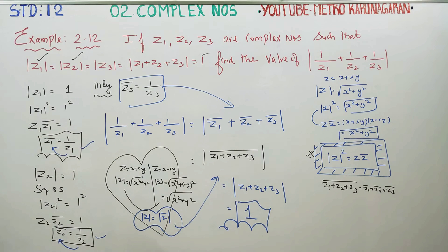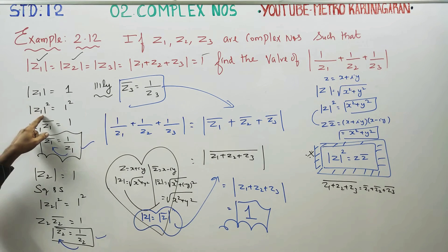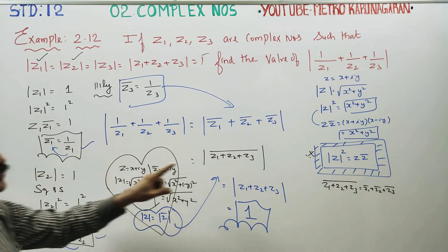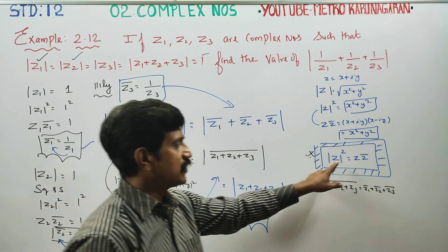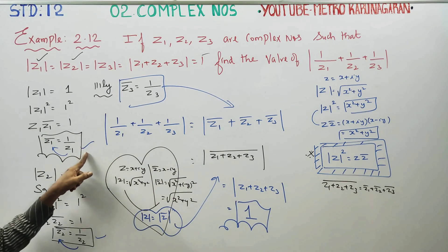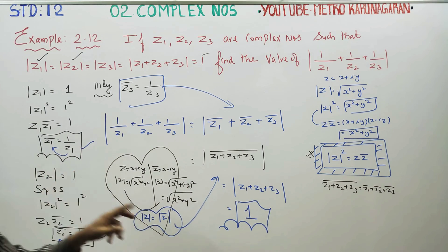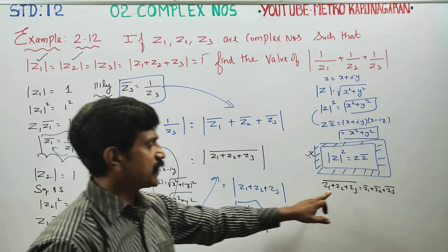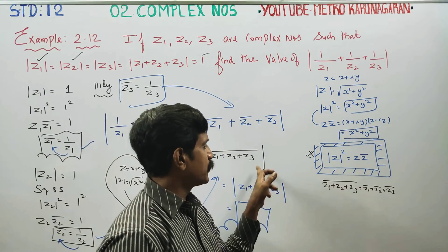If you use the property Z1 squared equals Z1 into Z1-conjugate, and you want a reference, you will find these properties listed.